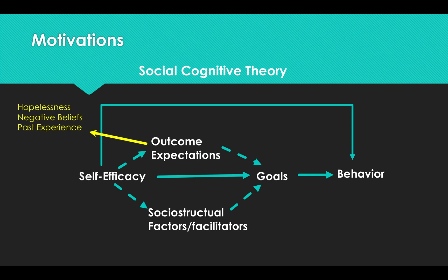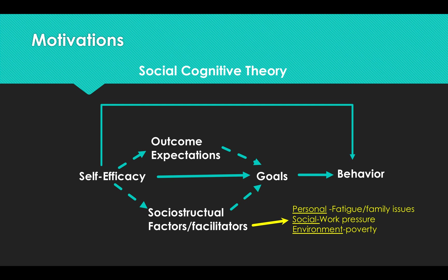What this suggests to us clinically is that our job is to address outcome expectations by generating hope, challenging negative beliefs, and reframing past experiences. It also encourages us to deal with the social-structural factors and facilitators like family issues, work pressures, and environmental issues that might prevent somebody from participating fully in rehab.